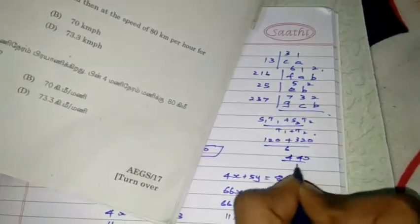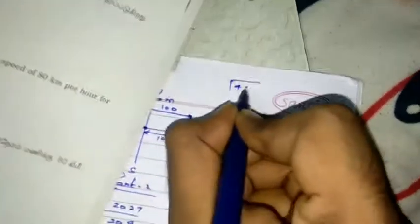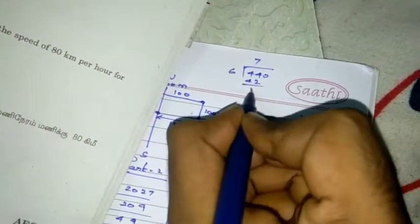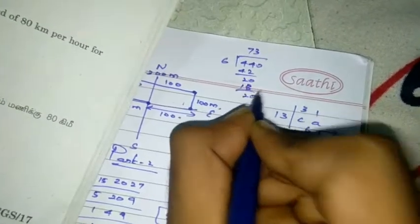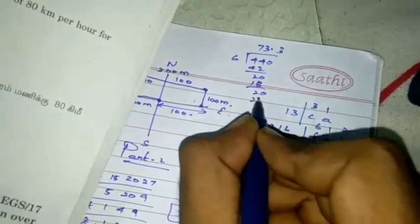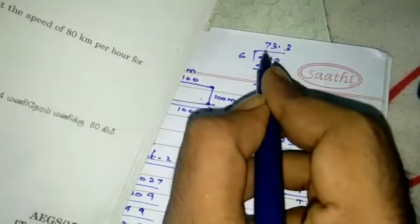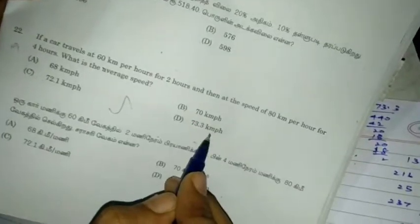So S1 T1. 60 into 2. 120. Plus S2 T2. 80 into 4. 320. Divided by T1 plus T2. 2 hour plus 4 hour. 6 hour. So 440 by 6 hour. 440 by 6. Divide. 6 7's are 42. So 20. 6 3's are 18. 20. 3.3. 18. So it goes on. 73.3. 73.3 km per hour.